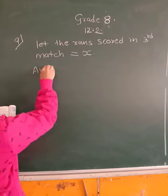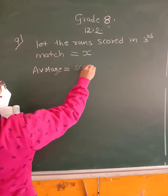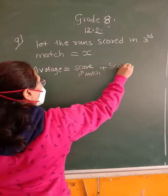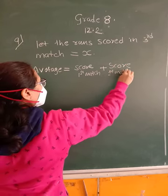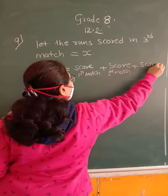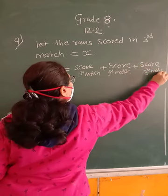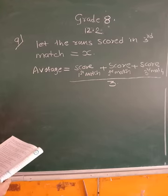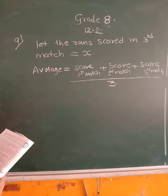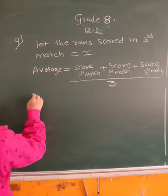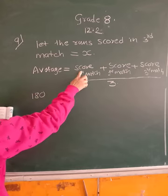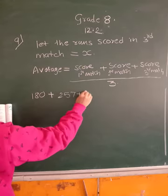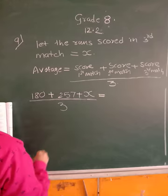So average, how to calculate? Score of 1st match plus score of 2nd match plus score of 3rd match, divided by 3, that is how you get the average. The average given is 230. So score in 1st match is 180, plus 2nd match is 257, plus X upon 3, this should equal 230.